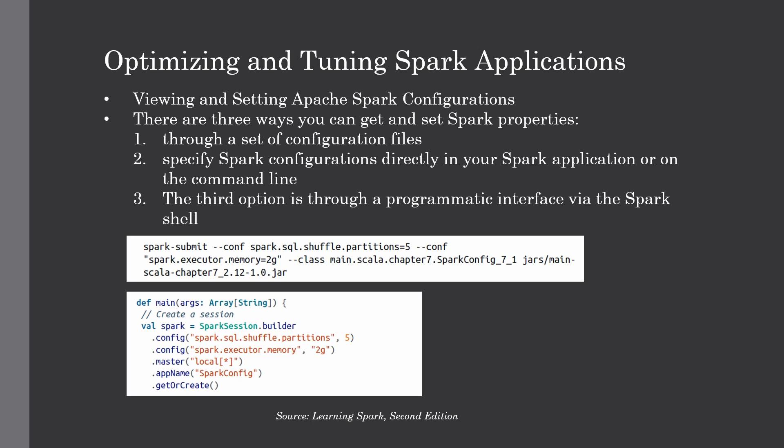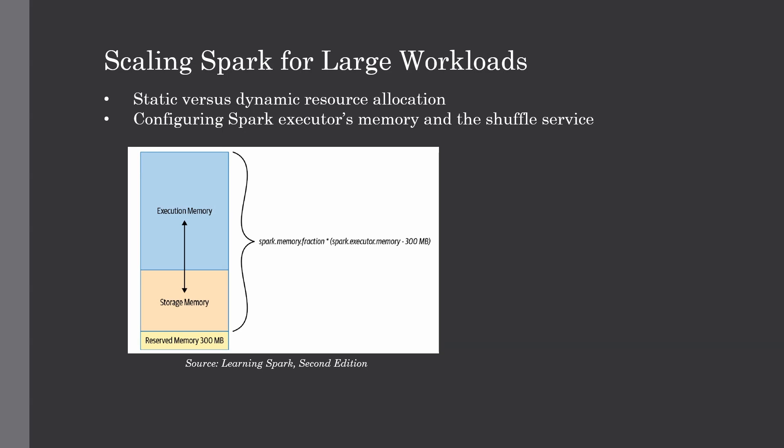Tweaking the right configuration will help performance, and the recommendation is choosing the right configuration for your application. Now we'll see how to scale your Spark application for large workloads — this is very important when dealing with petabytes of data. Large Spark workloads are often batch jobs, such as a delta load from source to target. Some might run on a nightly basis while others are scheduled at regular intervals. In either case, these jobs will process tens of terabytes of data or more.